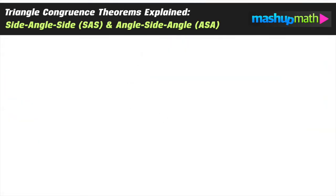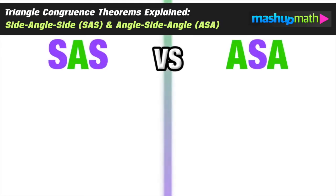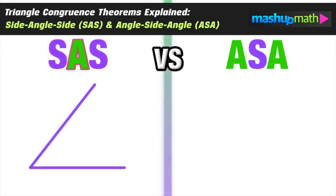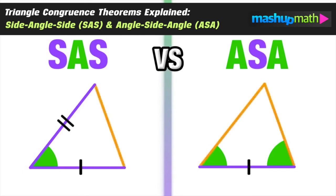Now we can visually compare these two theorems to help us better understand them and ultimately choose the right one. Side angle side involves two congruent sides with an angle in between them, and angle side angle involves two congruent angles with a side in between them. Be sure to keep these differences in mind so that when you are working with congruent triangles, you use the appropriate theorem based on the information you have.